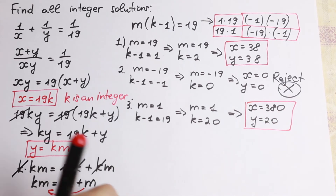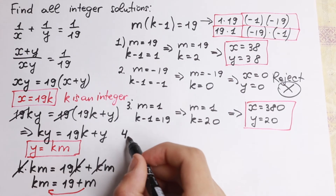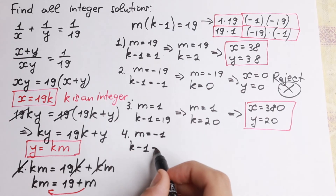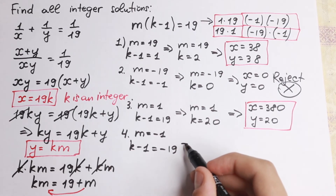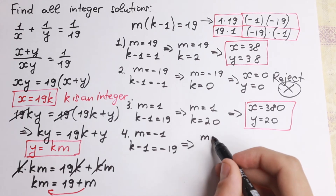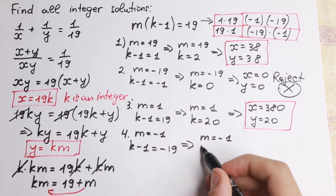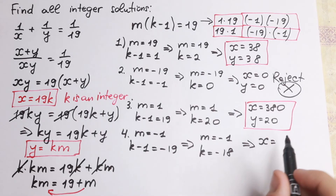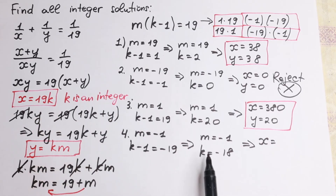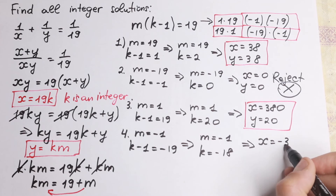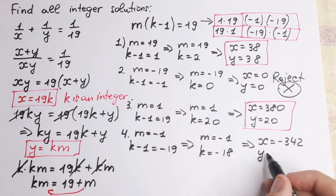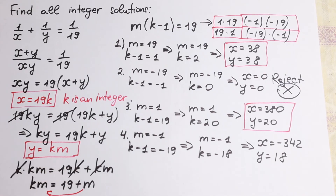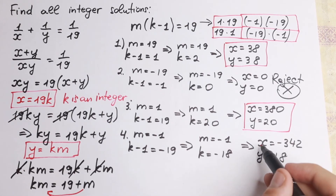For the last case, m equal to minus 1 and k minus 1 equal to minus 19. So m equals minus 1 and k equals minus 18. Plugging in, x equal to 19 times minus 18 gives x equal to minus 342, and y equal to km gives y equal to 18. This is our third pair: (minus 342, 18).